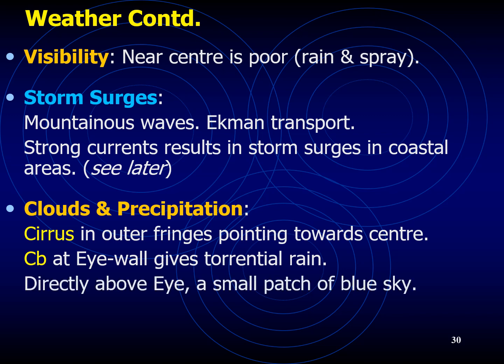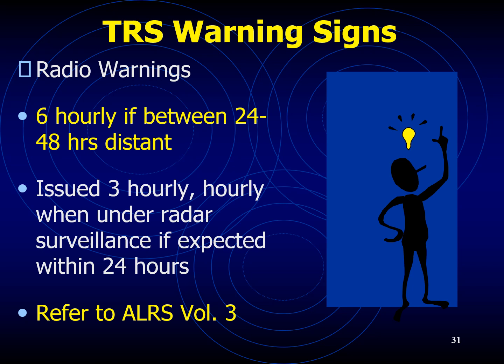Directly above the eye, a small patch of blue sky can be observed. In terms of warning signs, remember to refer to radio warnings, which are issued six-hourly if the vessel is between 24 and 48 hours from the tropical cyclone center, and issued three-hourly or hourly when under radar surveillance if expected to meet within 24 hours. Make sure you refer to the ALRS — Admiralty List of Radio Signals, Volume 3 — for the channels or sources of weather information to access regarding the TRS.